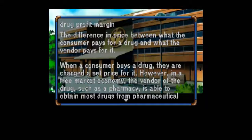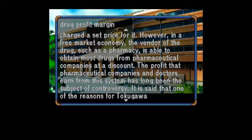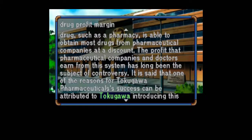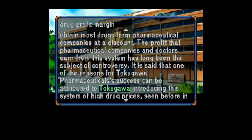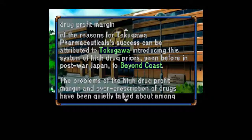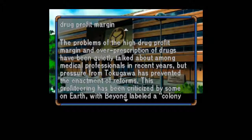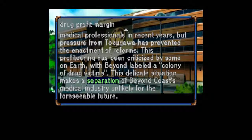Drug Profit Margin: The difference in price between what the consumer pays for a drug and what the vendor pays for it. When a consumer buys a drug, they are charged a set price for it; however, in a free market economy, the vendor — such as the pharmacy — is able to obtain most drugs from pharmaceutical companies at a discount. The profit that pharmaceutical companies and doctors earn from this system has long been the subject of controversy. It is said that one of the reasons for Tokugawa Pharmaceuticals' success can be attributed to it introducing this system of high drug prices — seen before in post-war Japan — to Beyond Coast. The problems of the high drug profit margin and over-prescription of drugs have been quietly talked about among medical professionals, but pressure from Tokugawa has prevented the enactment of reforms.